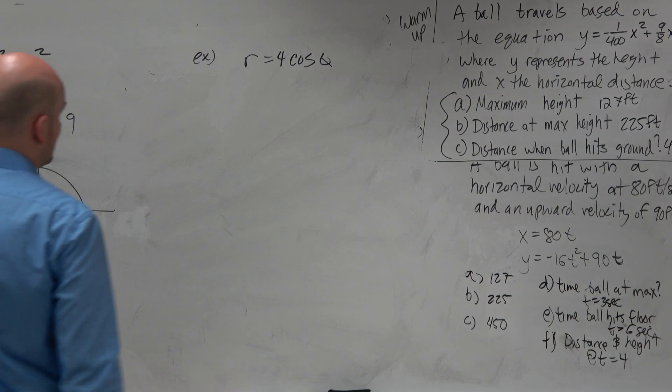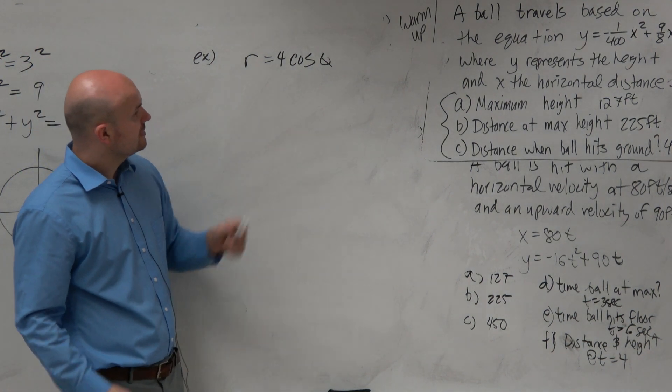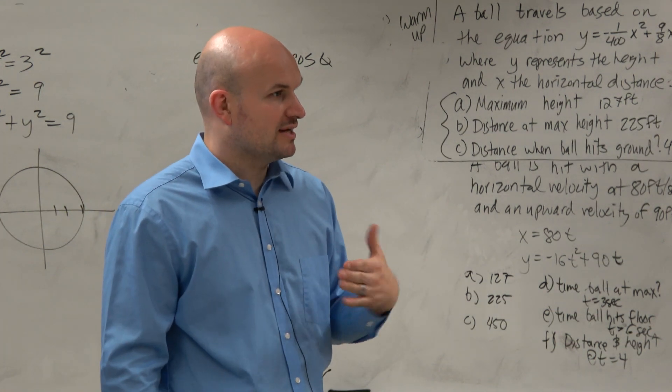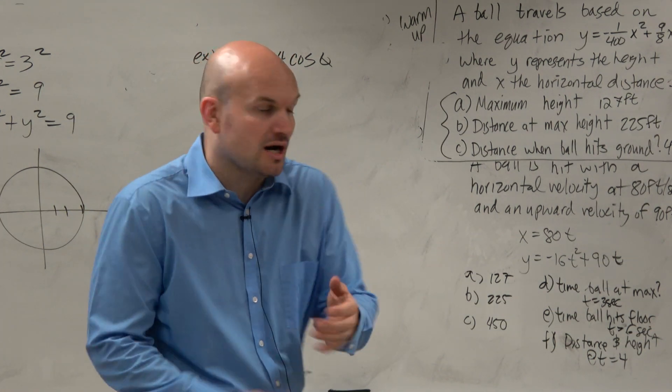All right. Let's look at this one real quick. r equals 4 cosine of theta. Now this one, squaring doesn't really work. And we have a cosine. It's just not multiplied by an r.